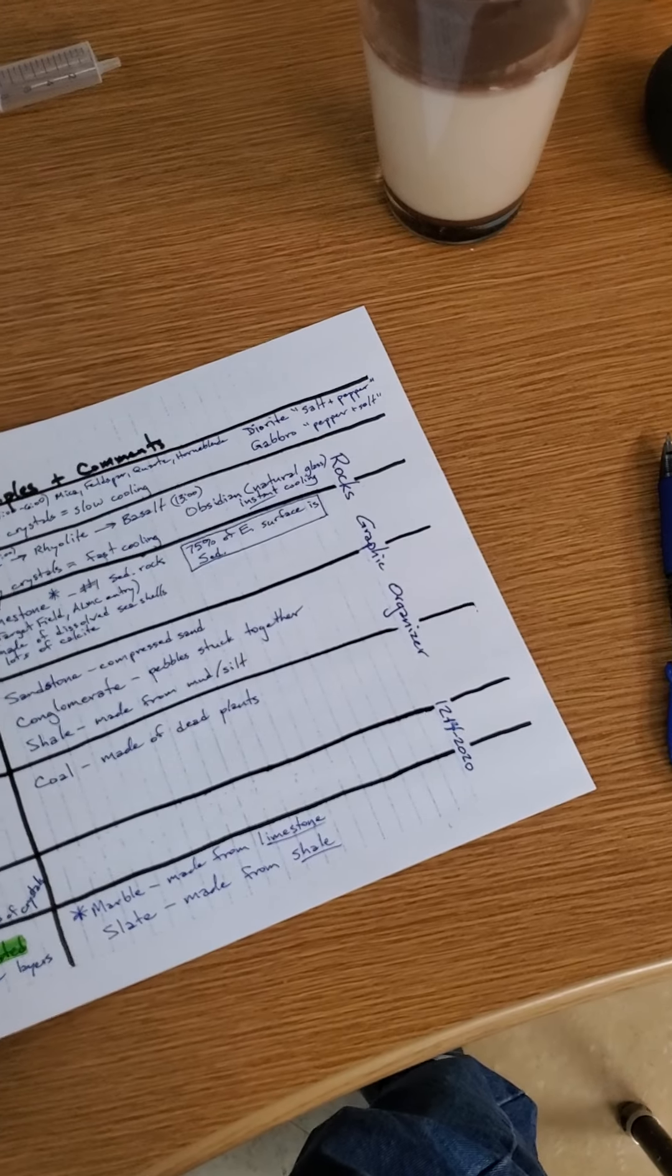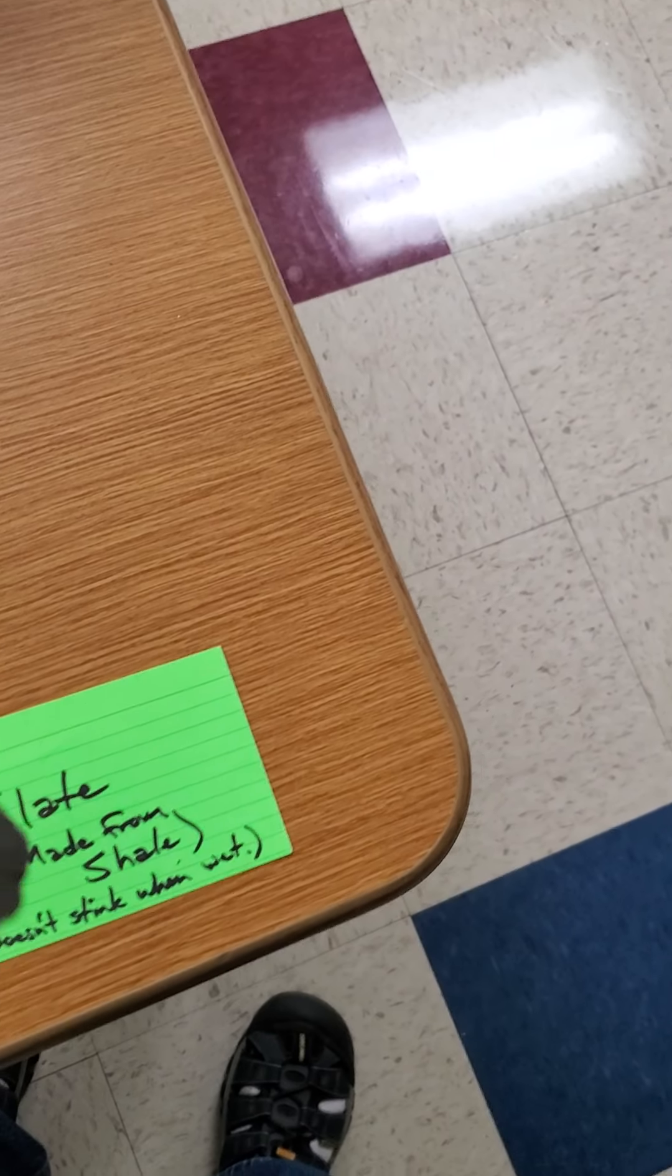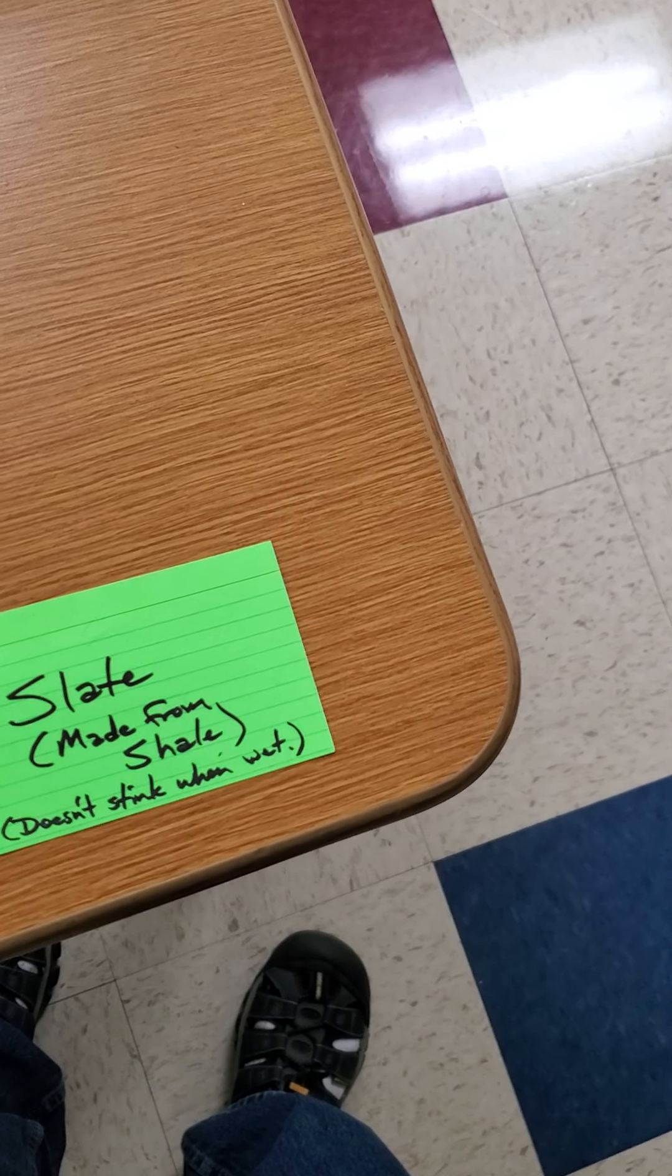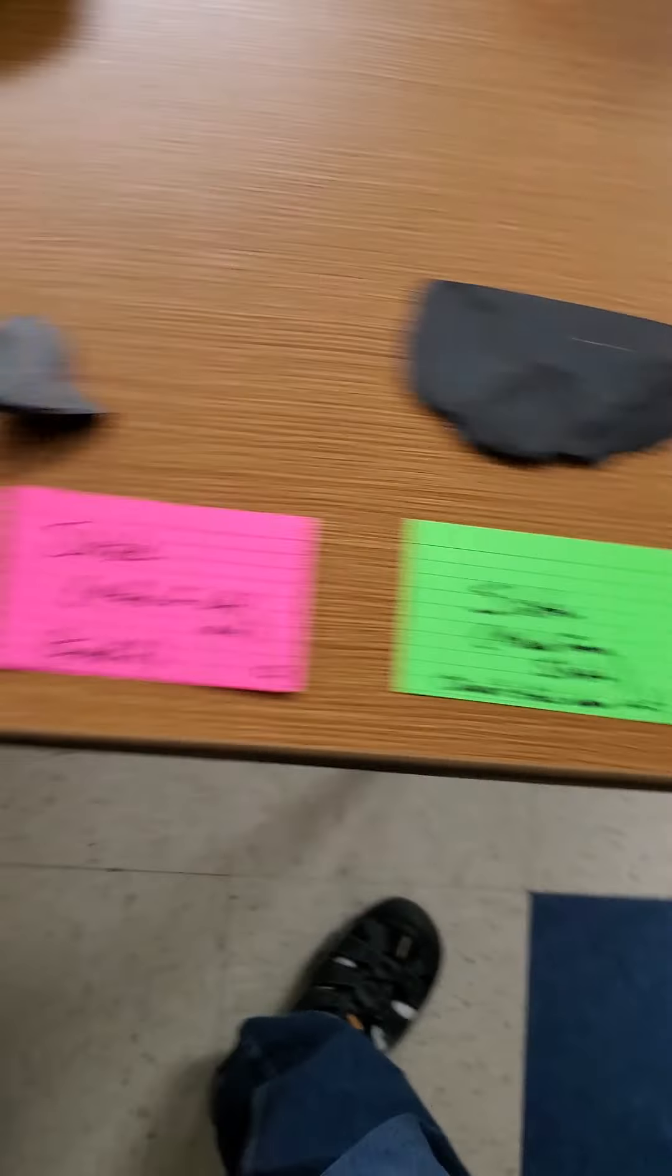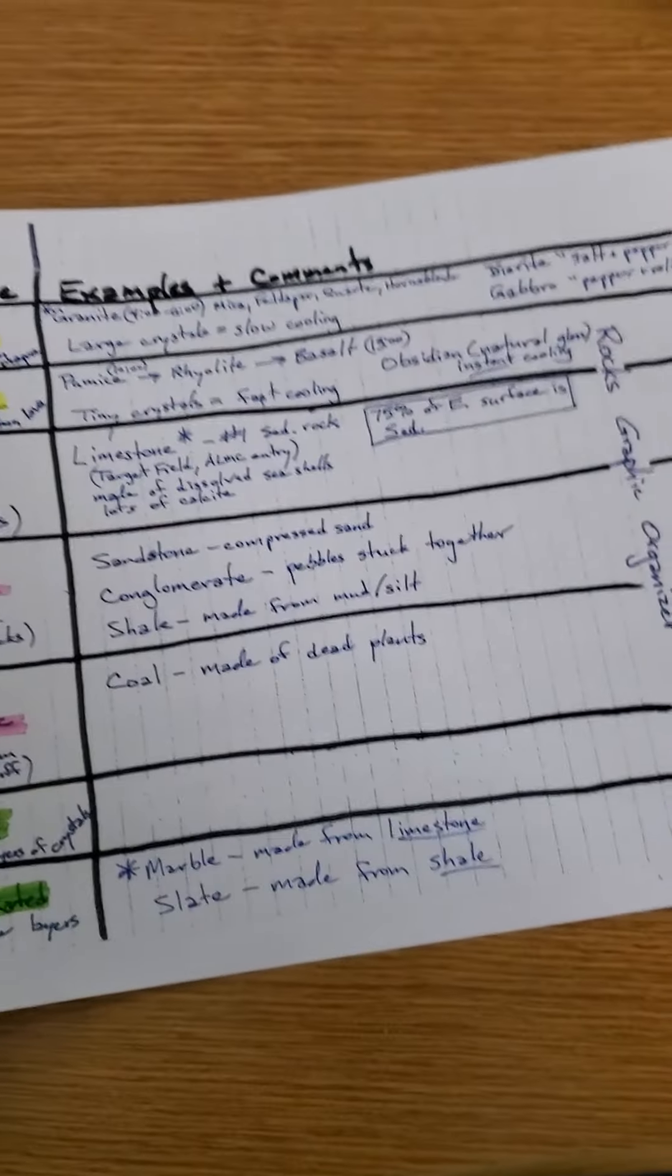Now, should I, maybe I shouldn't have, phooey. Slate has visible layers sometimes. So, this one, you can't see the layers. Well, sort of, kind of. Slate can be on both, I guess. So, it can be foliated or non-foliated.